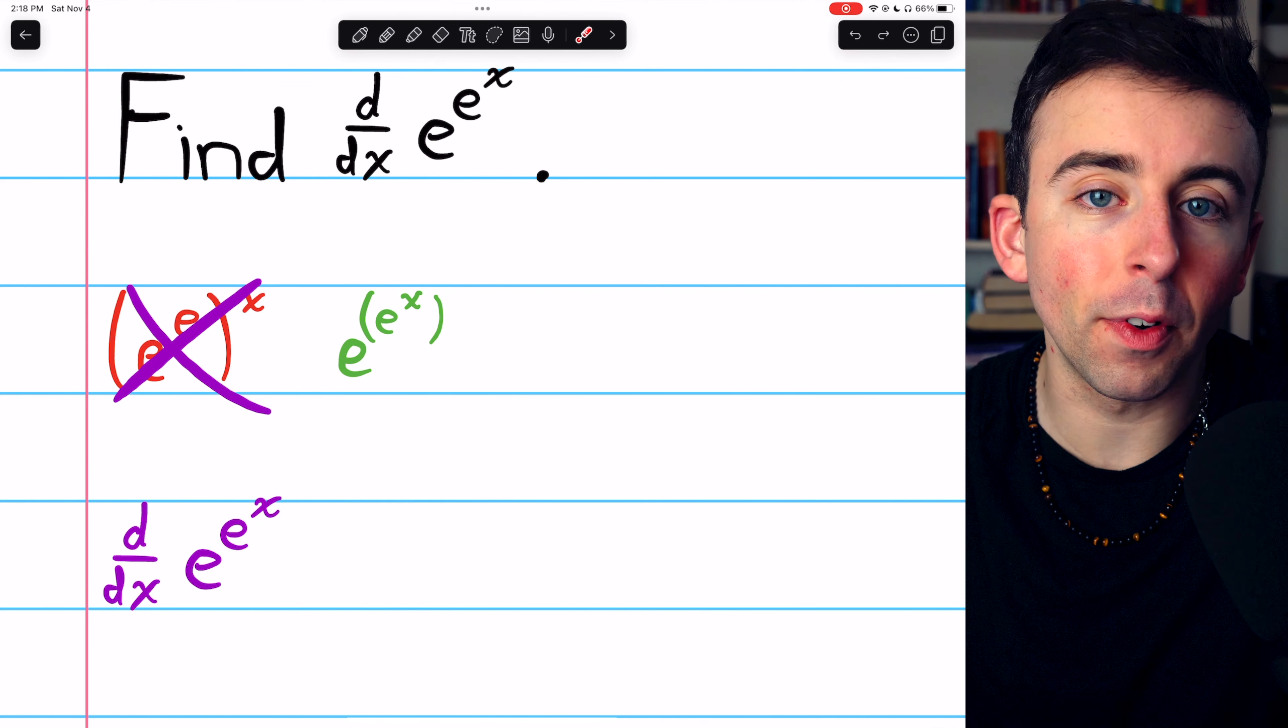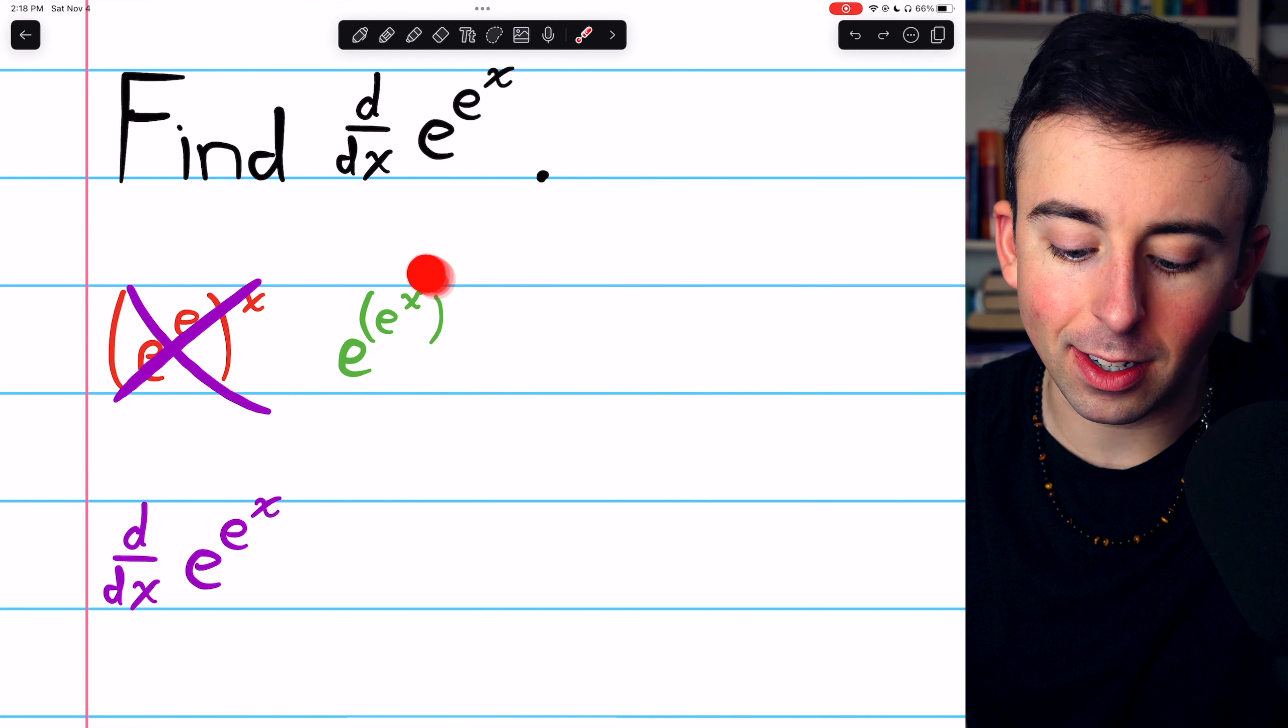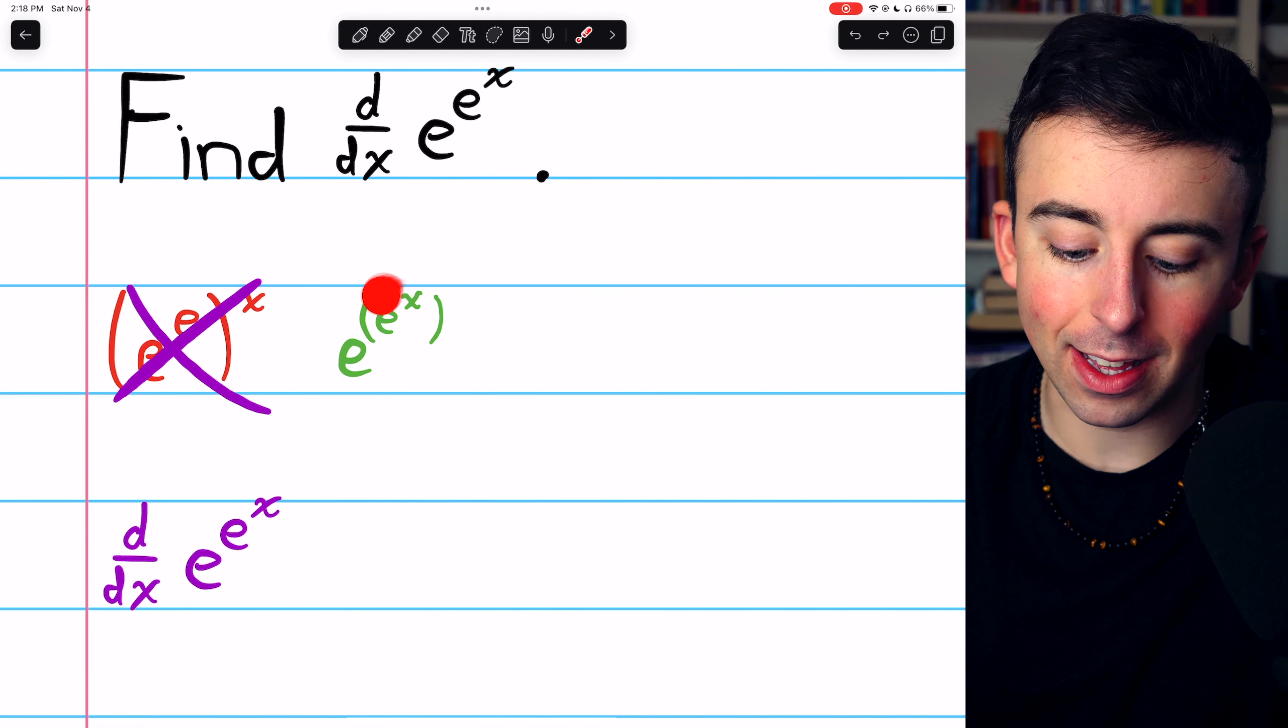Thus, this is a composite function. The outside function is the exponential, e to some power, and the inside function is that power, e to the x.